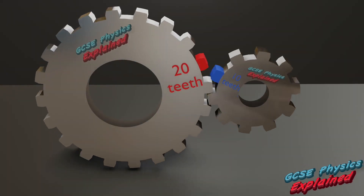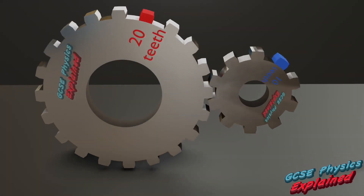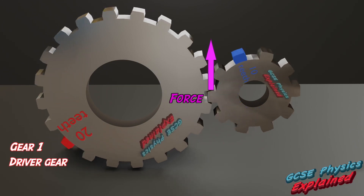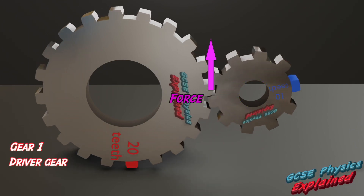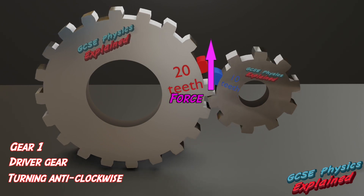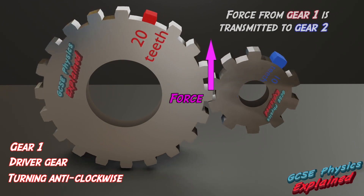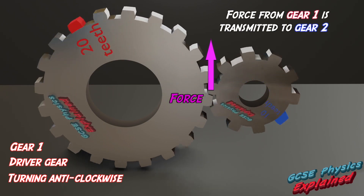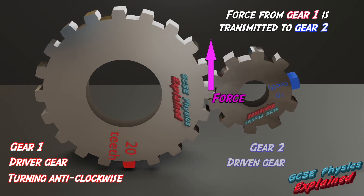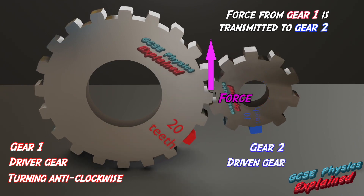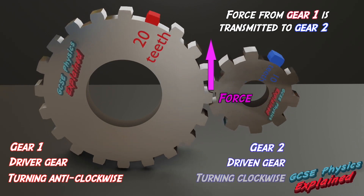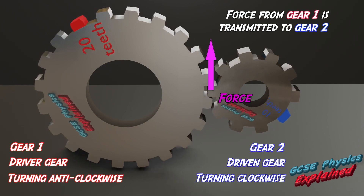The engine is supplying a force to gear 1, called the driver gear, which makes it turn anti-clockwise. The driver gear transmits the same size force onto gear 2, called the driven gear, but it makes it rotate in the opposite direction — clockwise in this example.